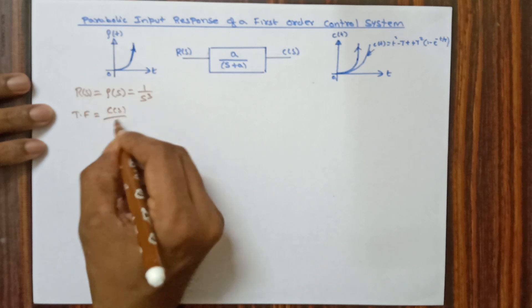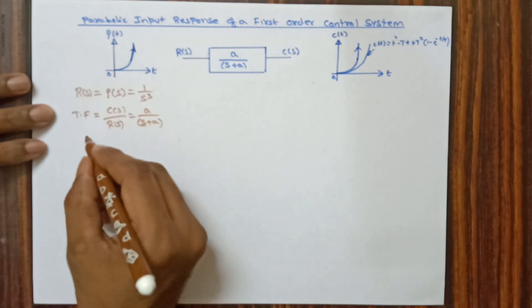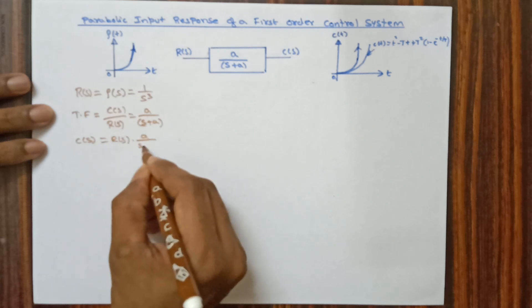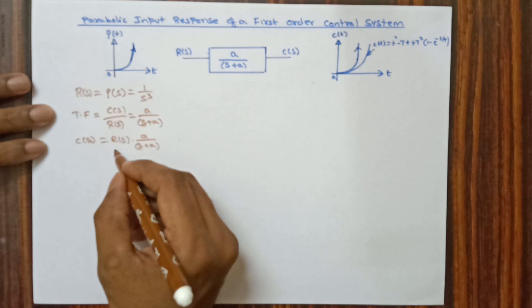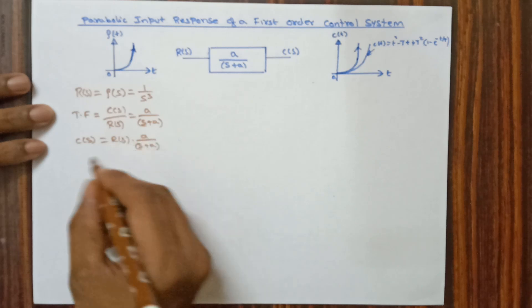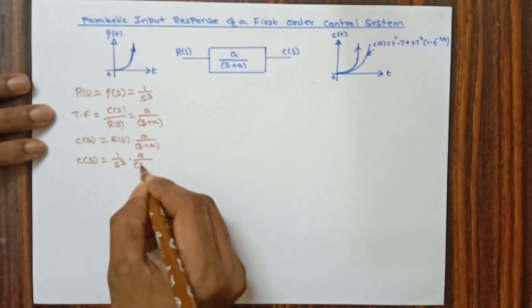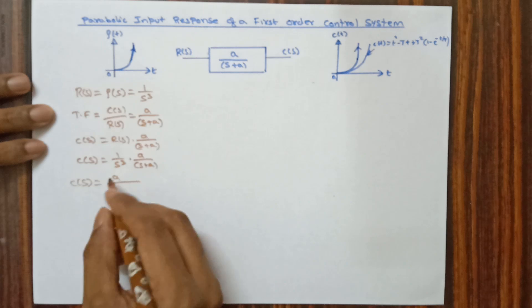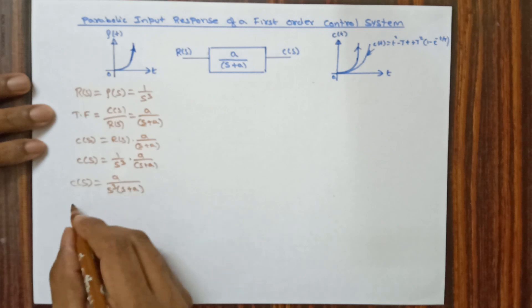We know the transfer function is C(s)/R(s) = a/(s+a) for a first order system. Then output C(s) = R(s) · a/(s+a). For parabolic input, R(s) = 1/s³. Substituting, we get C(s) = (1/s³) · a/(s+a), which can be written as C(s) = a / [s³·(s+a)].